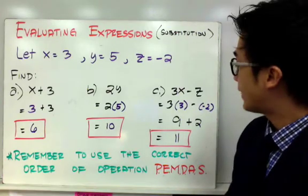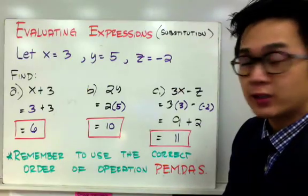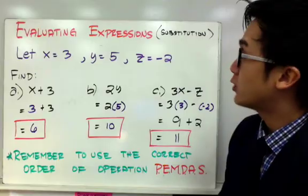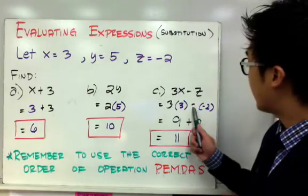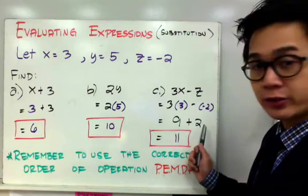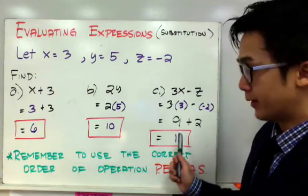Now notice that I need to use my rule in adding and subtracting signed numbers because that is part of the skill that you need to have to evaluate expressions. So negative and negative becomes positive, so you'll end up with 9 plus 2, which gives you 11.